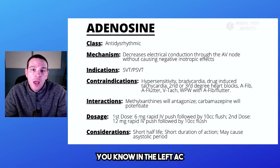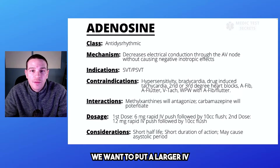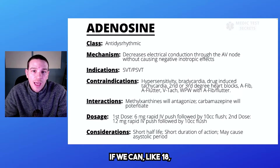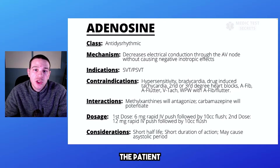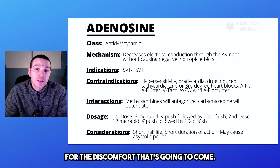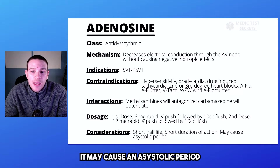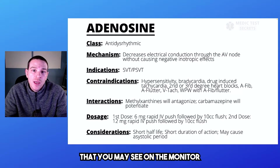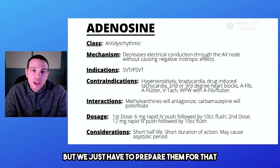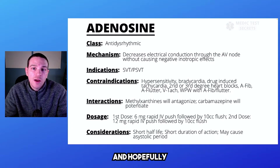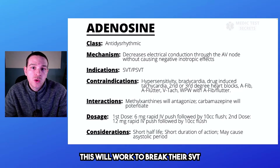We want to put the IV as close to the heart as possible — in the left AC. We want a larger IV if we can, like an 18, even though a 20 will work. We have to prepare the patient for the discomfort that's going to come. It may cause an asystolic period on the monitor, and the patient may feel very uncomfortable. Hopefully this will work to break their SVT.